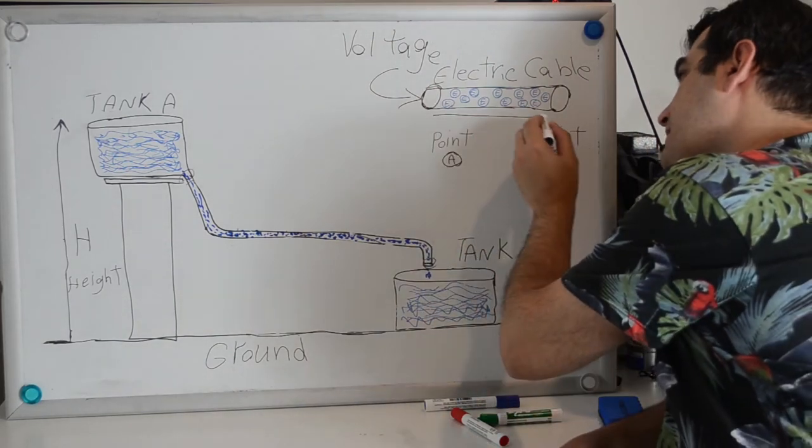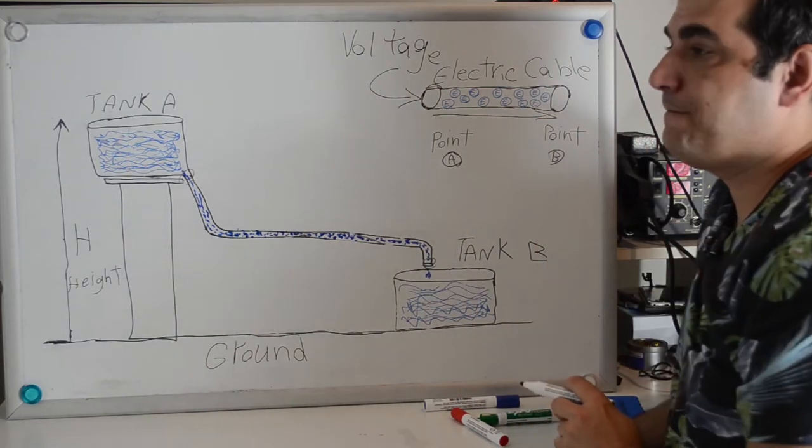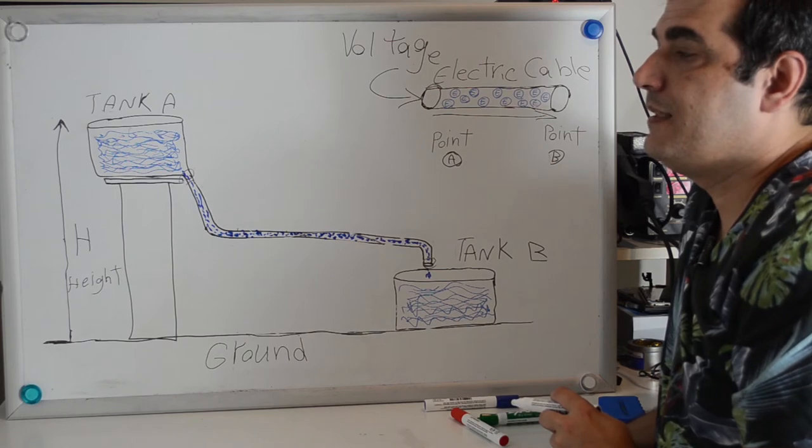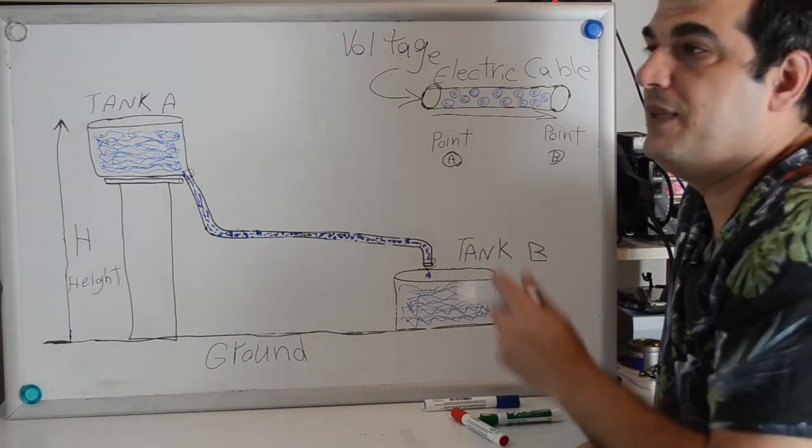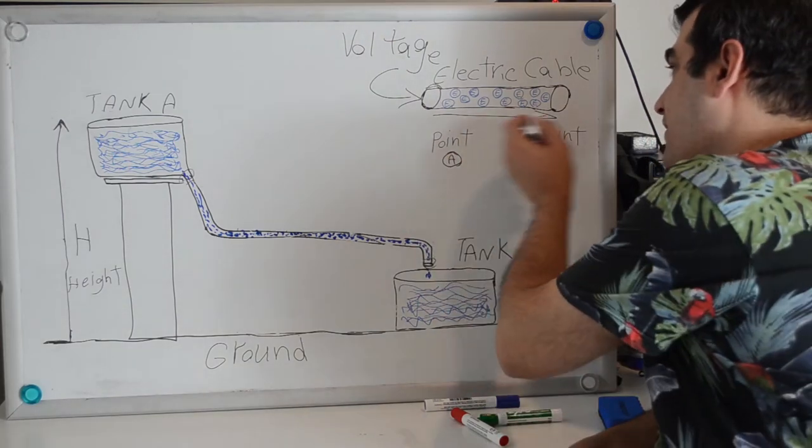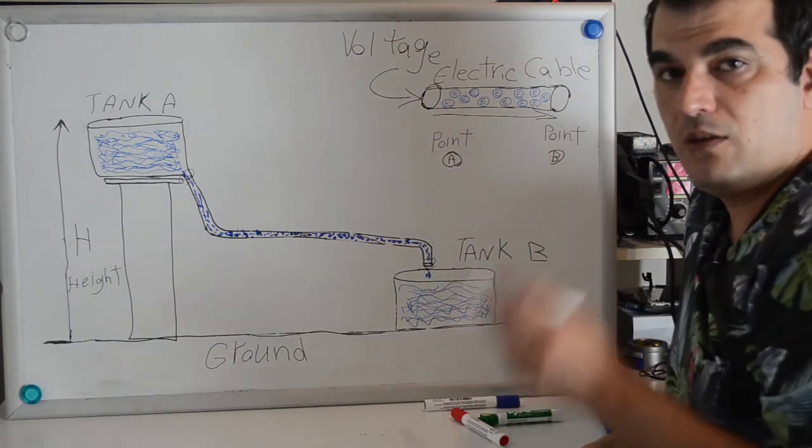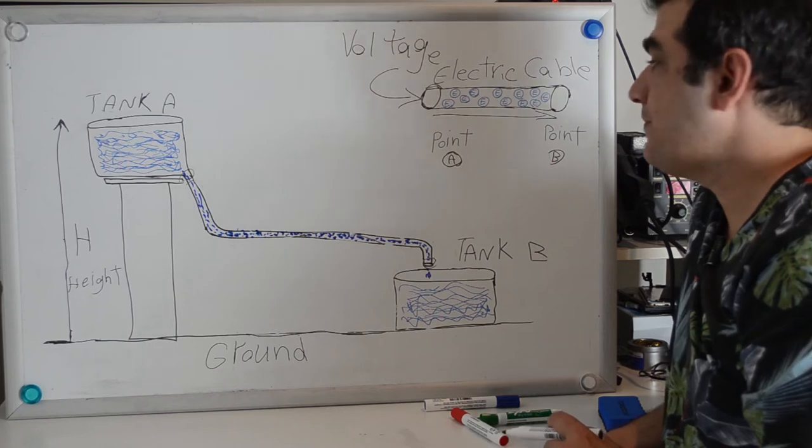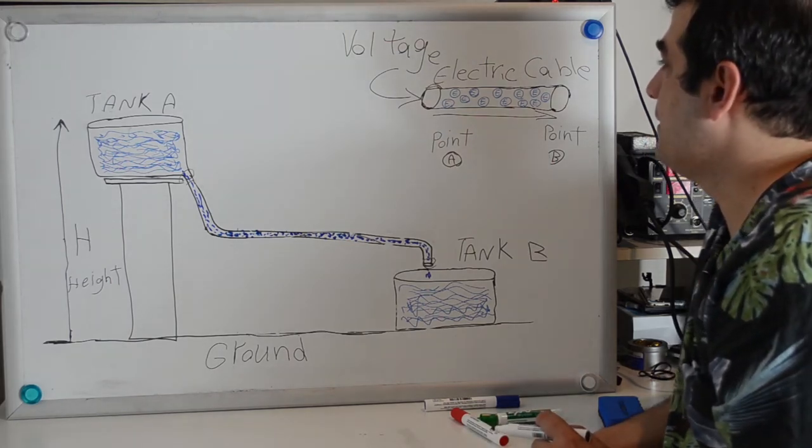When the movement of electrons occurs in a specified direction, this is called electric current.